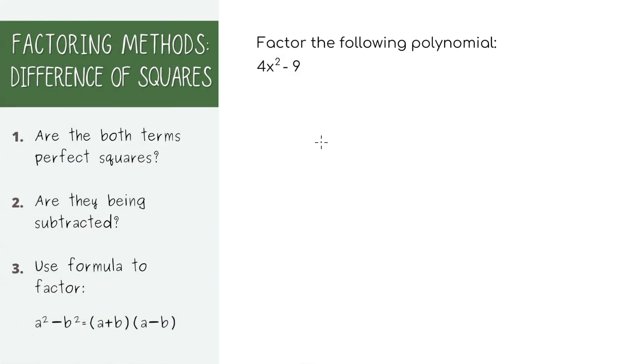There are also very specific cases where your polynomials are perfect squares or perfect cubes. So if you ever see two terms that are perfect squares and they're being subtracted, this is important that they're being subtracted, you can use the difference of squares formula where the factored form is this.